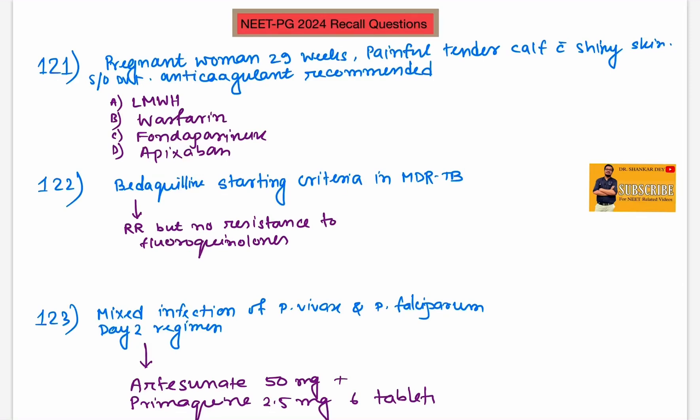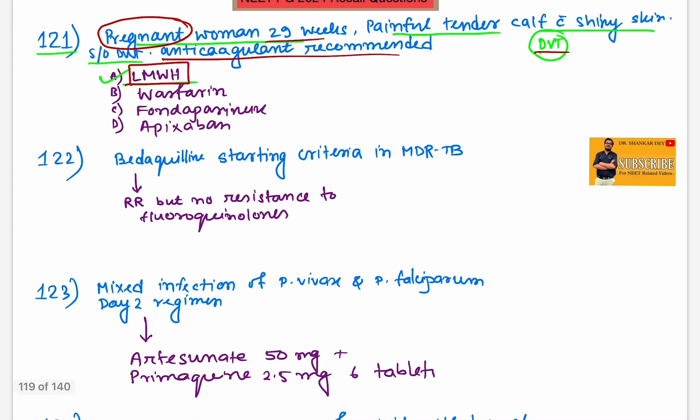Welcome to another video of NEET PG 2024 recall question discussion, starting with question number 121. Pregnant woman of 29 weeks presenting with painful tender calf and shiny skin, suggestive of DVT. Patient is pregnant at 29 weeks, best anticoagulant option will be low molecular weight heparin.